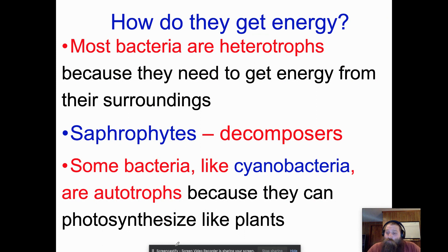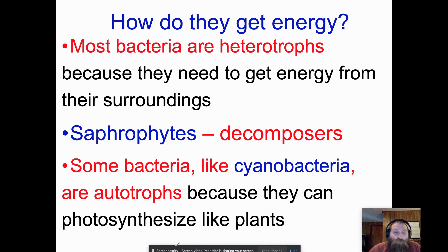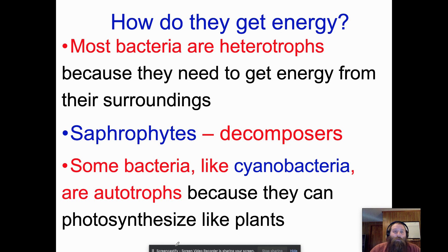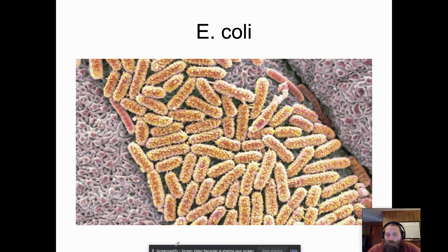Most bacteria are heterotrophs — they don't make their own food, they get it from their surroundings. Some bacteria are classified as decomposers, called saprophytes. And then there are some bacteria like cyanobacteria which are autotrophs. So we have heterotrophic bacteria, autotrophic bacteria, and saprophytic bacteria that decompose things. There's a great picture here of E. coli, possibly on a tongue or intestinal wall.